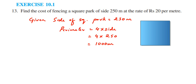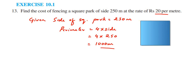The perimeter is 1000 meters, which means he has to put a fence of 1000 meters. Now, per meter they are charging 20 rupees — for 1 meter they charge 20 rupees. We have to find out for 1000 meters how much they are going to charge.